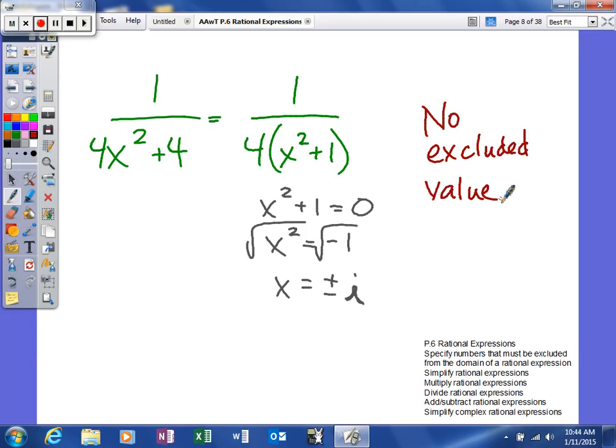Remember, what we're trying to do is we're plugging in real numbers into our domain. So x can be any real number we want. The fact that it can't be plus or minus i isn't going to affect the real numbers. So there are no excluded values in a problem like this.